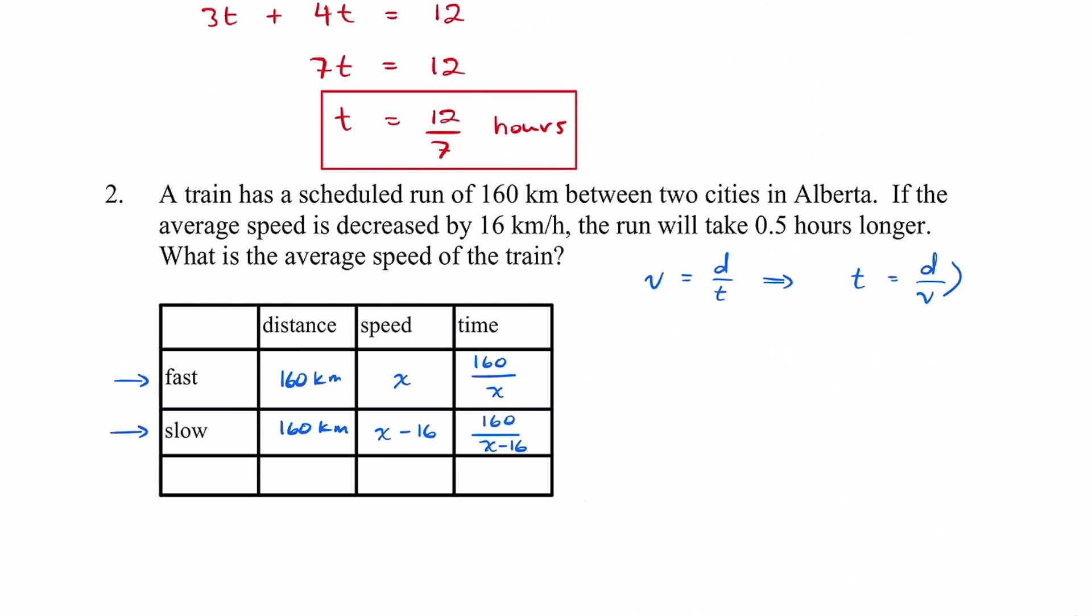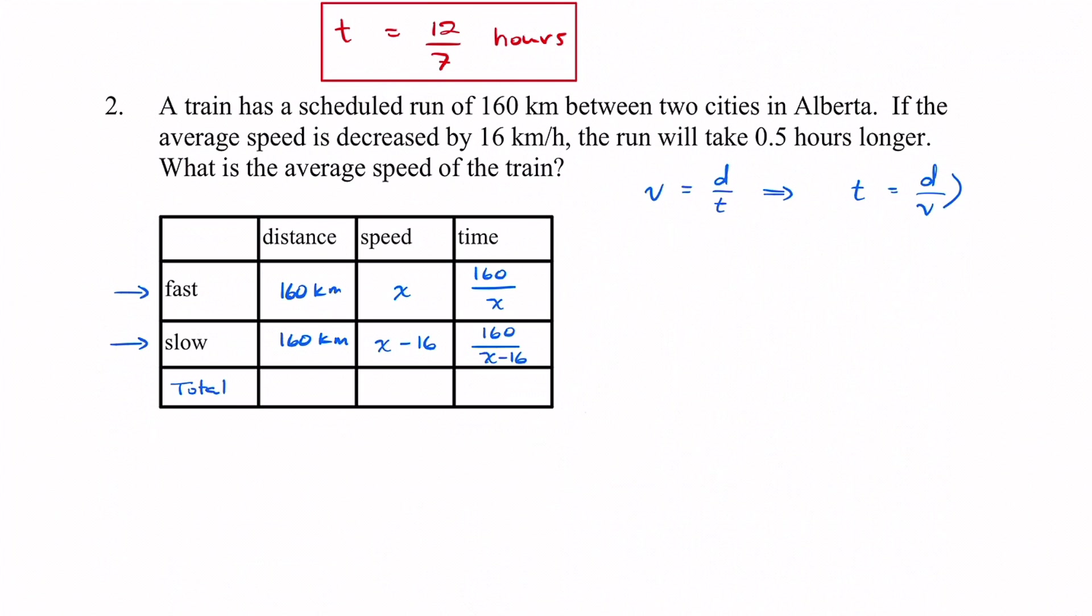Sometimes for some questions it's useful to have a category where you have the total and then you add up what the total is for these. That just kind of depends on the question. With this one we're not going to need to do that. So we want to find the average speed of the train which we labeled as x.